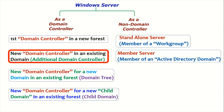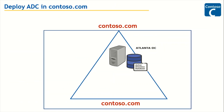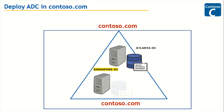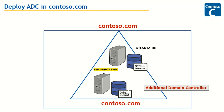We are going to deploy a new domain controller in an existing domain — that is, an additional domain controller. The current setup has a domain named contoso.com with one domain controller: Atlanta DC. Our target is to install and configure Active Directory Domain Services on a new server named Singapore DC, promote it to a domain controller, and make it an additional domain controller in the contoso.com domain.